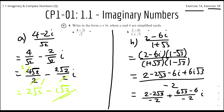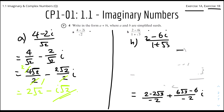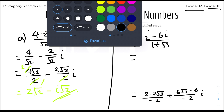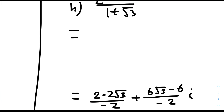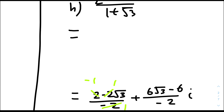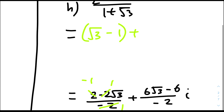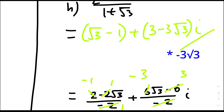We simplify by dividing through by minus 2. The real part: (2 minus 2 root 3) over minus 2 gives root 3 minus 1. The imaginary part: (6 root 3 minus 6) over minus 2 gives 3 minus 3 root 3, which simplifies to minus 3. Therefore the answer is (root 3 minus 1) + (3 minus root 3)i.